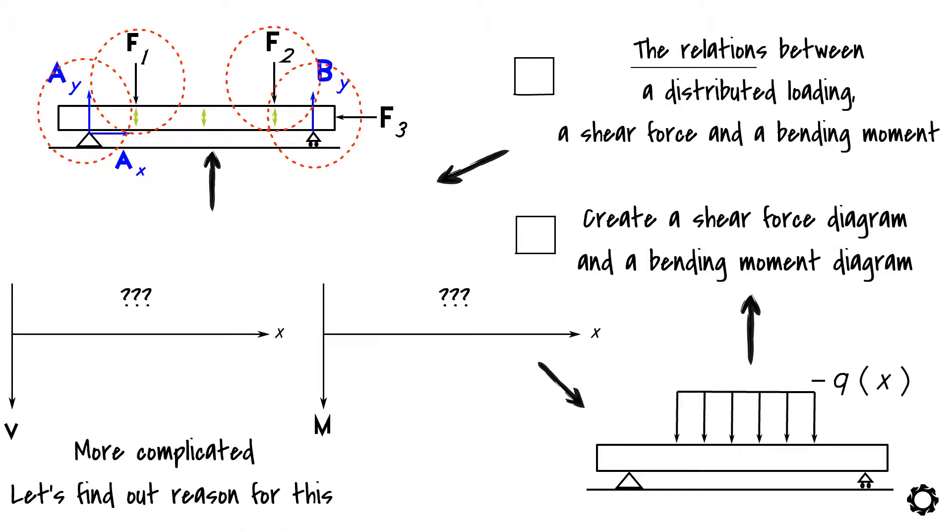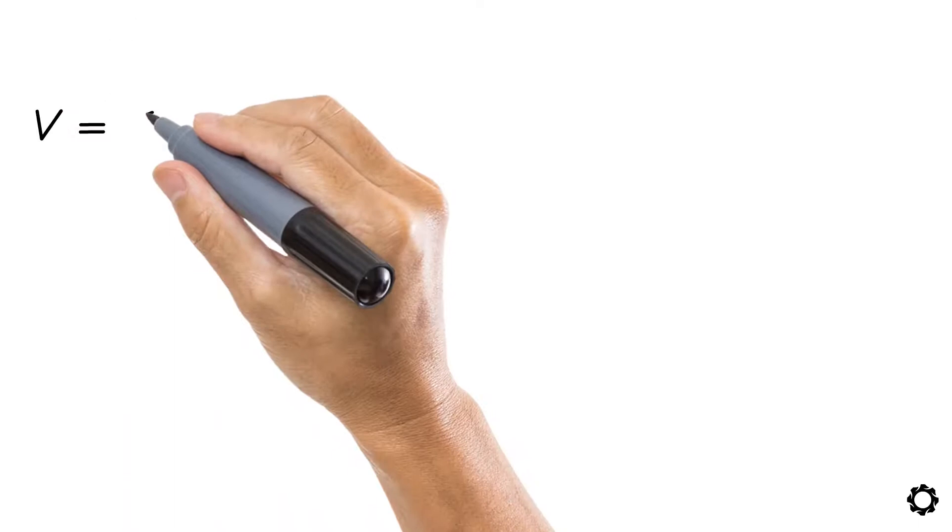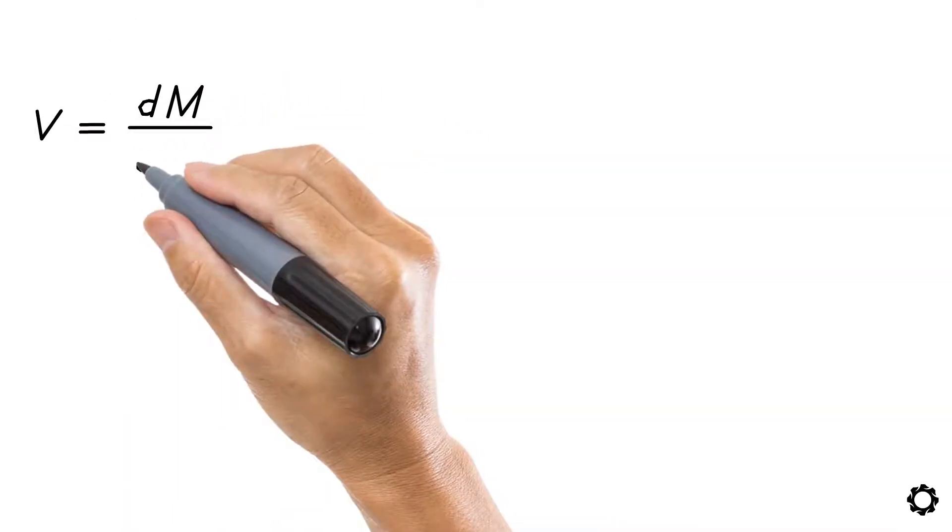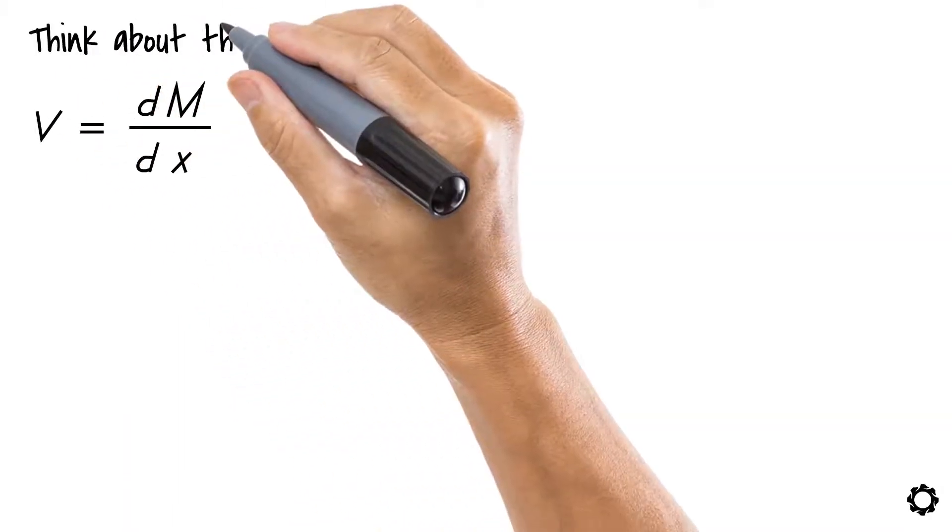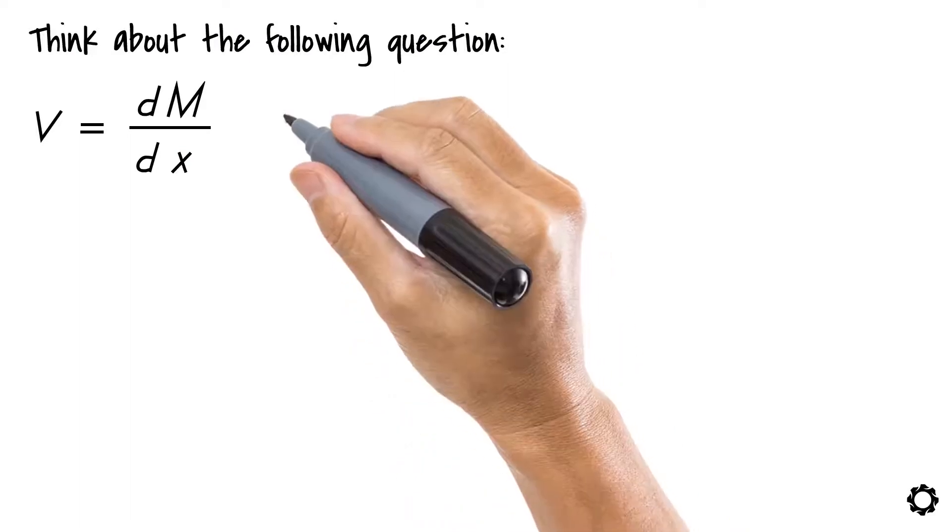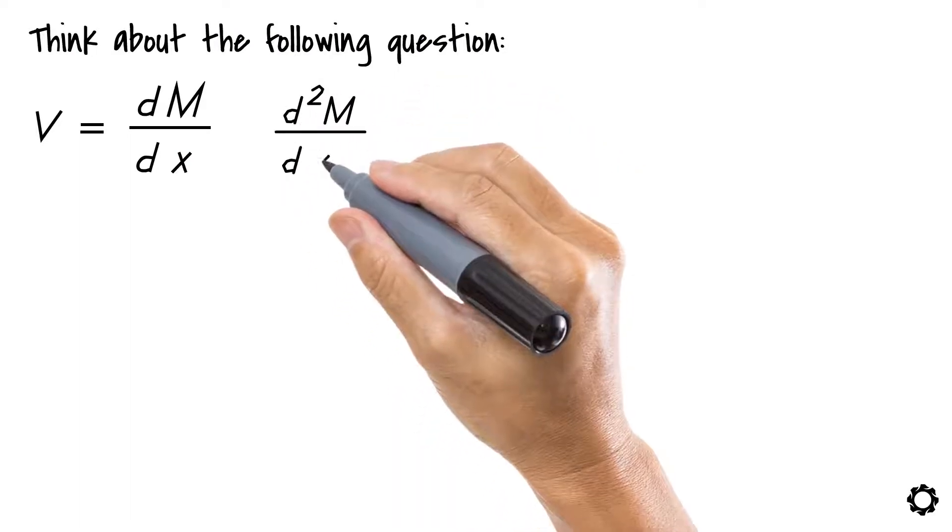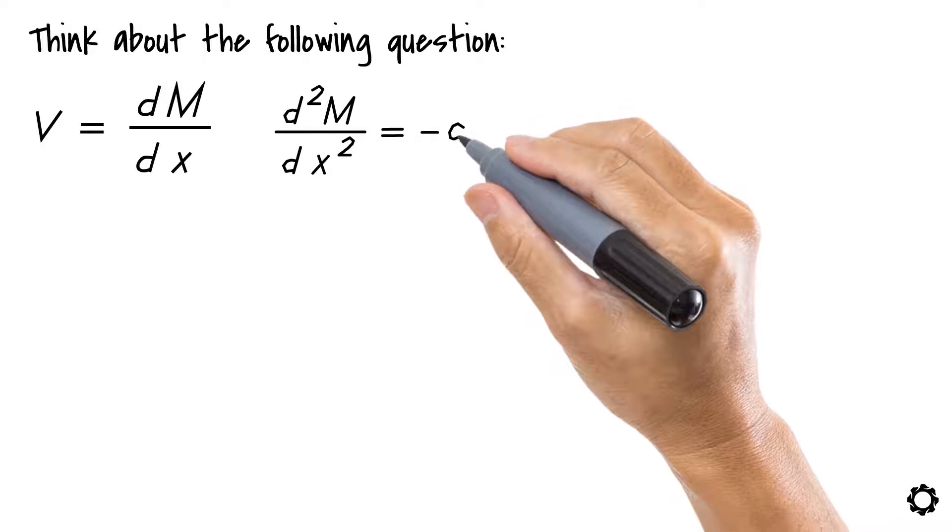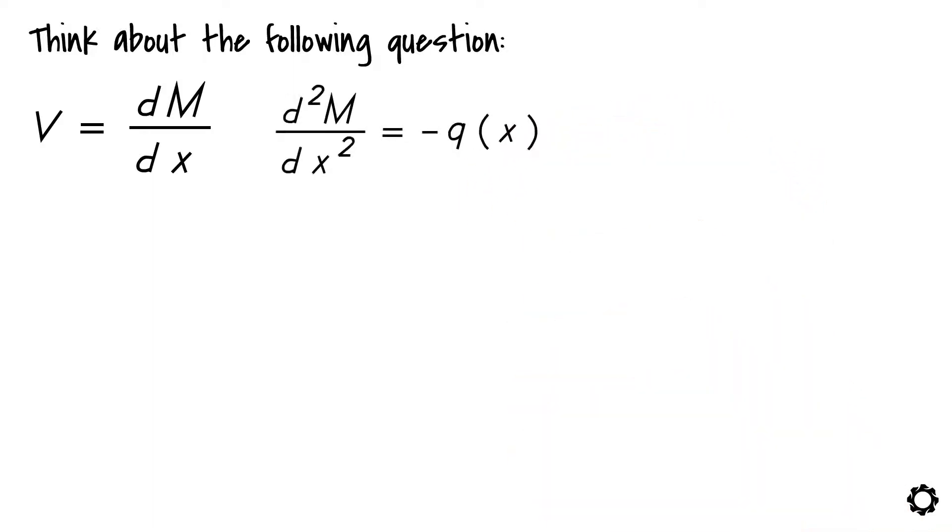As you may remember from the previous video, we learned that a shear force is actually a first order derivative of the bending moment. Now think about the following question. If the bending moment diagram will follow the second order of differential equations, would this mean that a distributed load would perhaps be a second order derivative of the bending moment?